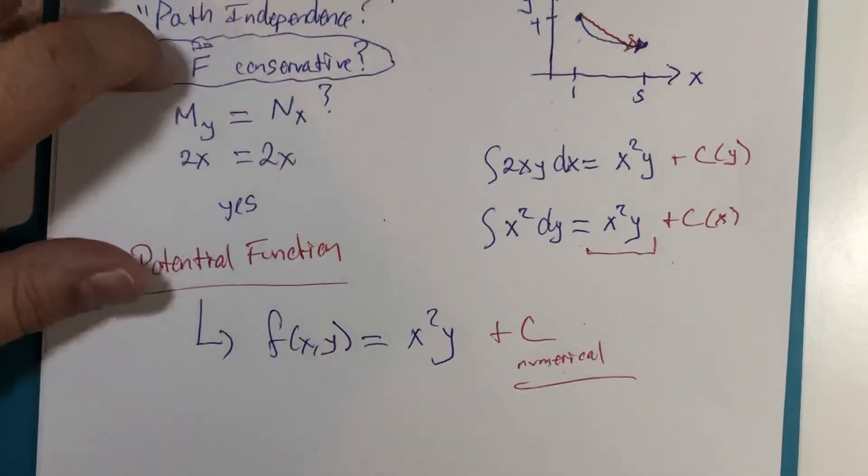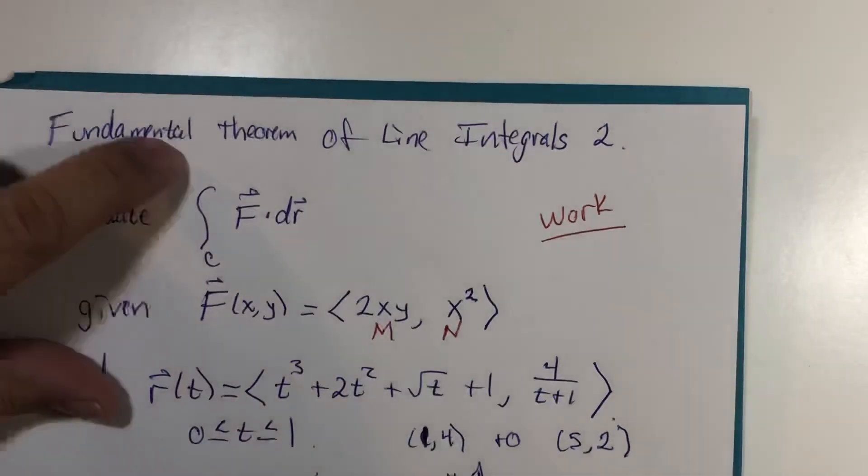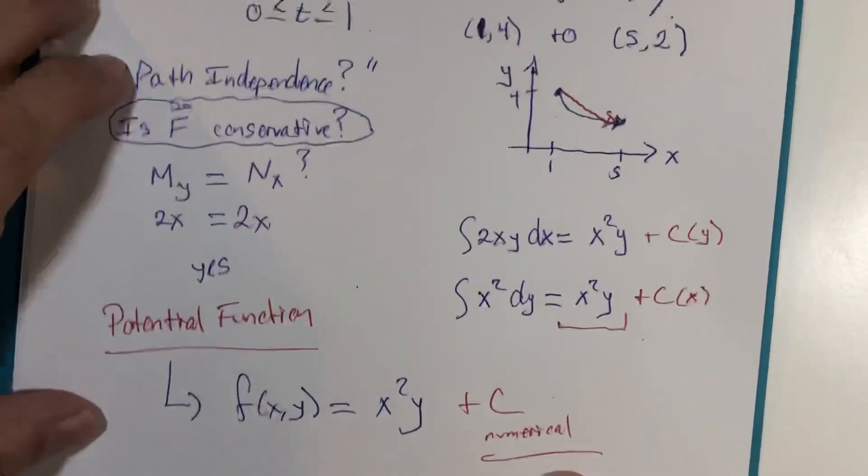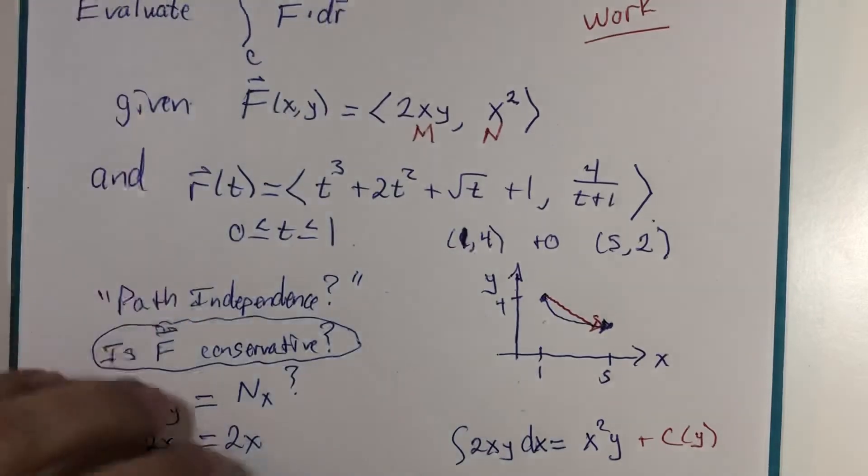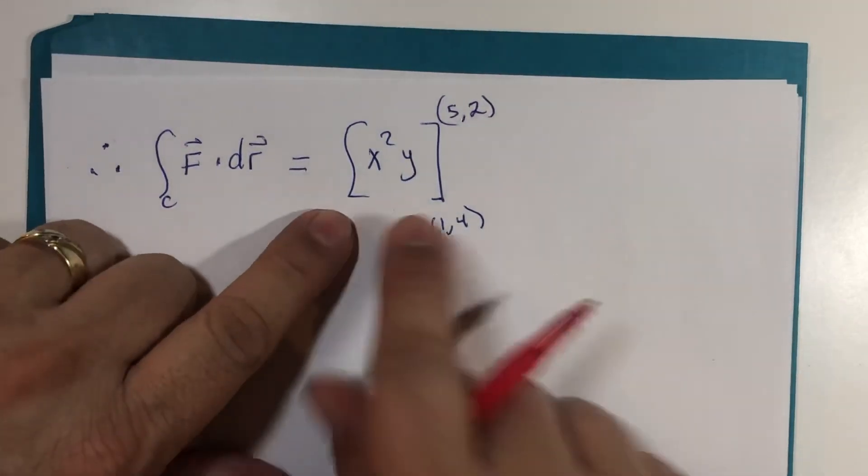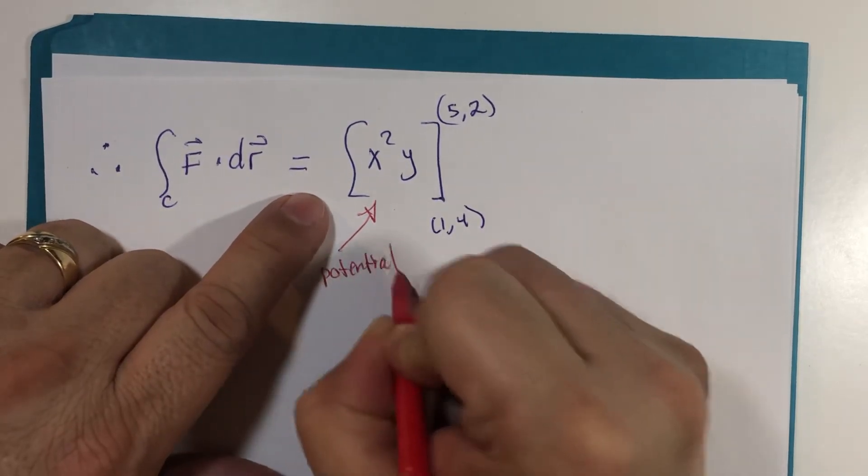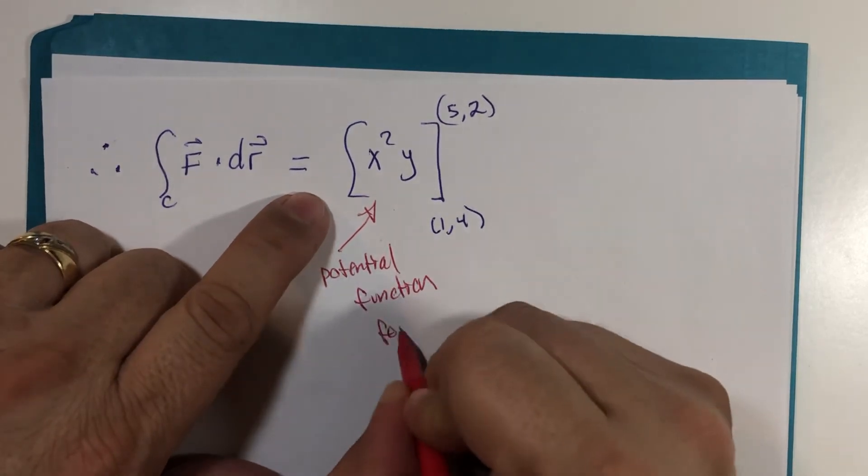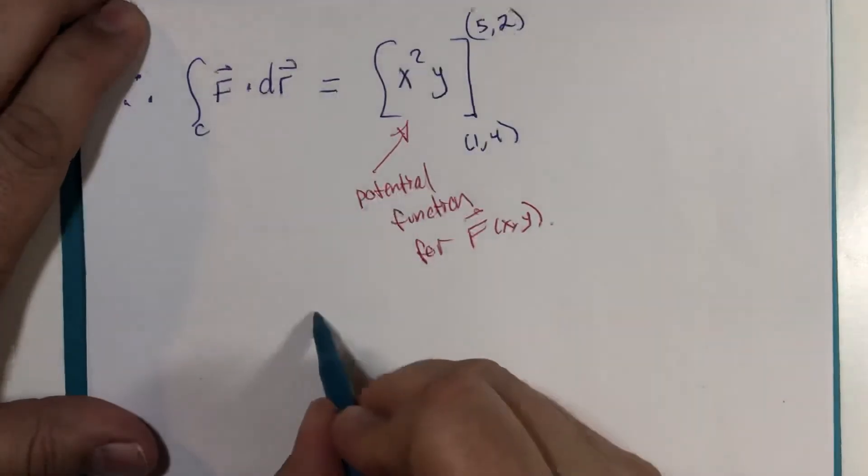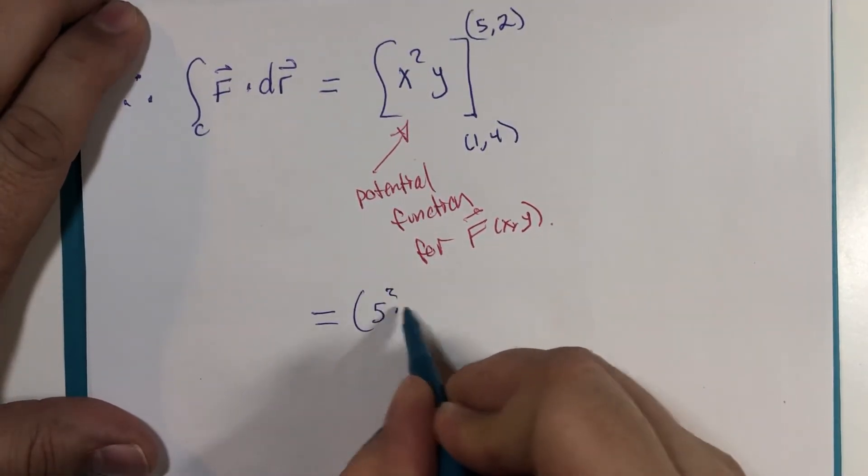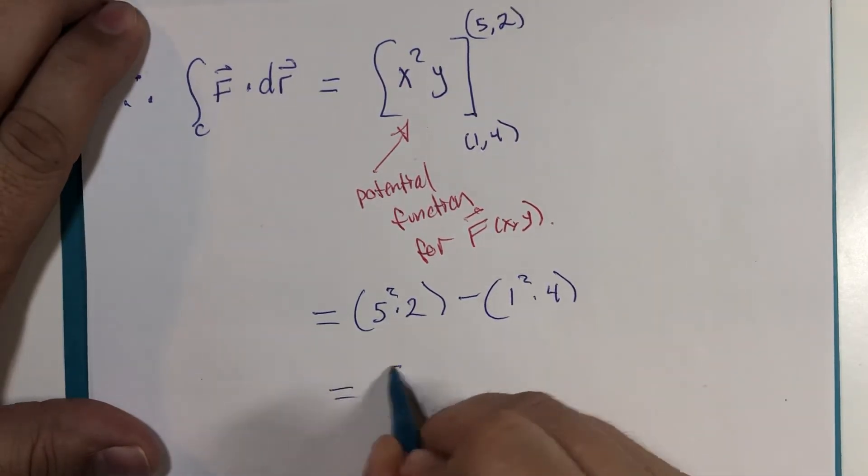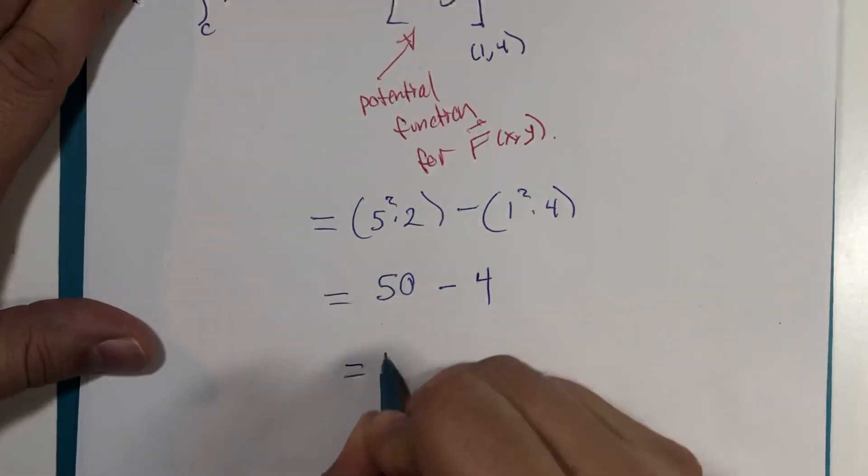Now, the Fundamental Theorem says, if you wish to calculate the work that's done, you just need to evaluate the potential function between the starting and ending points of your graph. So, that would look like the following. Here's the potential function for the vector field. And we just let x be 5 and y be 2, so that would be 5 squared times 2 minus x is 1 and y is 4. And we get 25 times 2 is 50 minus 4 is 46.